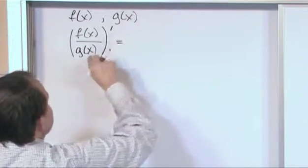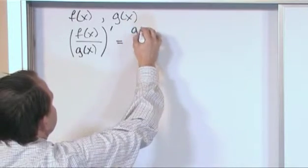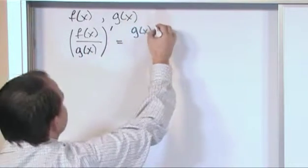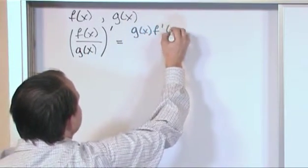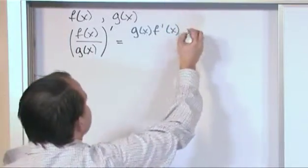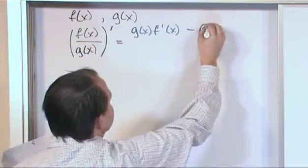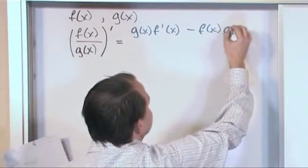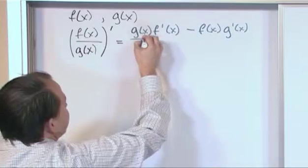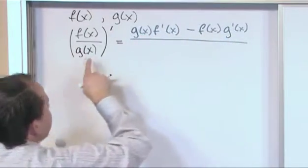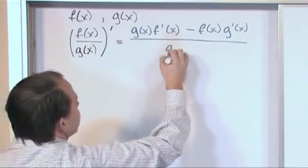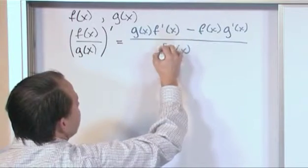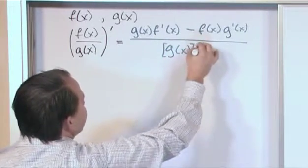So what you have is the bottom function, g(x), times the derivative of the top function, f'(x), minus the top function, f(x), times the derivative of the bottom function, g'(x). And then you draw a big division bar for the whole thing, and the bottom is g(x). Now, just to make it clear, I'll put it in brackets, the whole thing squared.